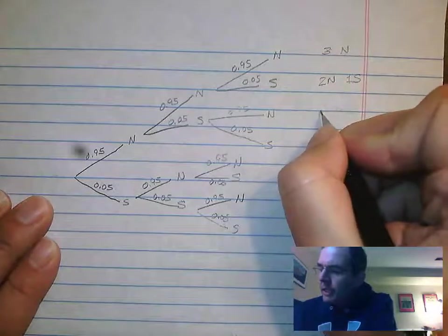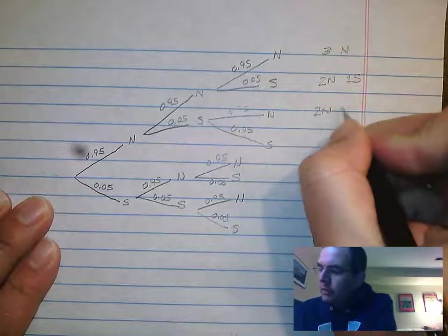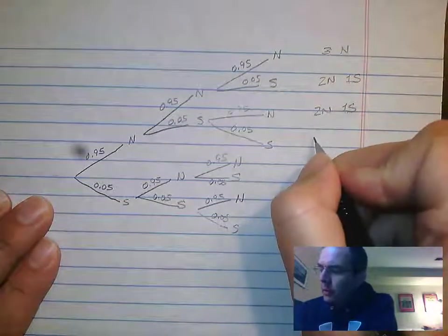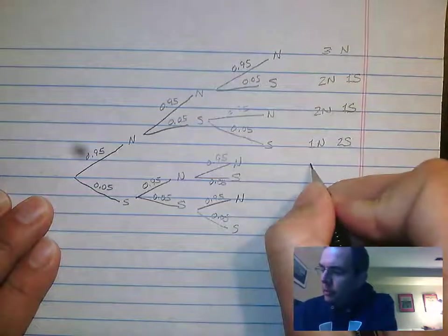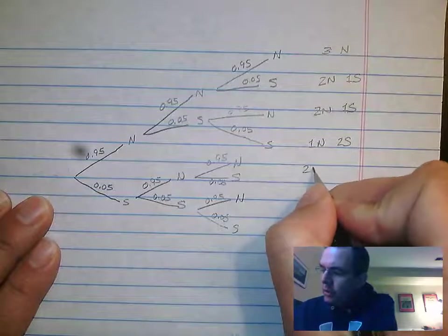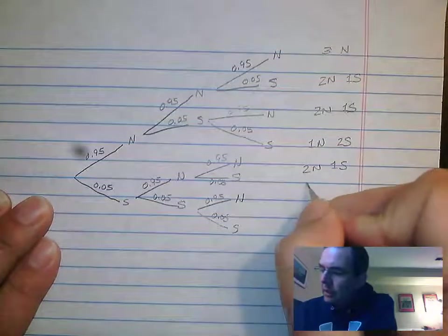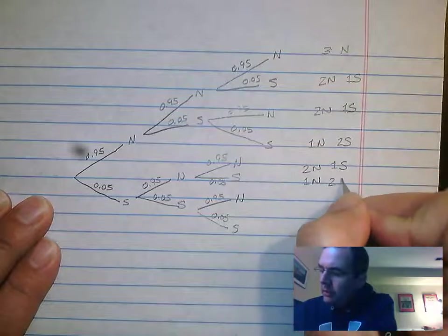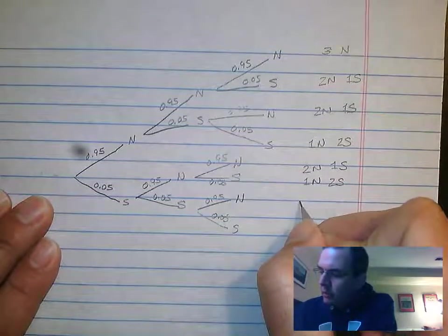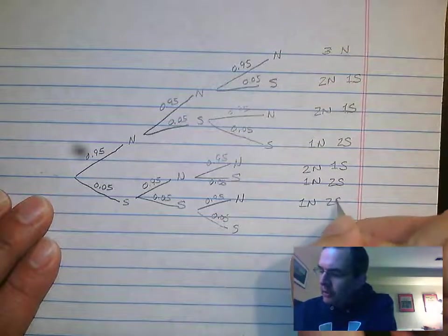This one here is two nos, one yes. This one here is one no, two yeses. This one here is two nos, one yes. This one here is one no, two yeses. This is one no, two yeses. And this one here is three yeses.